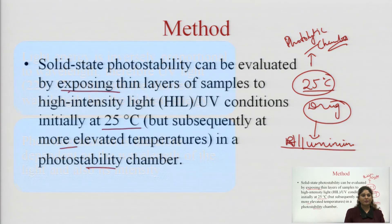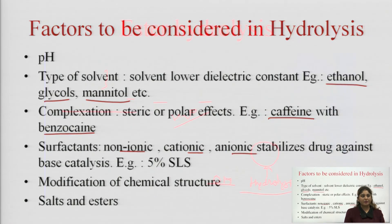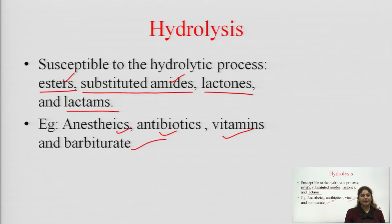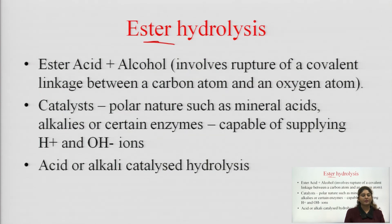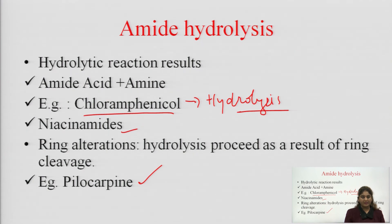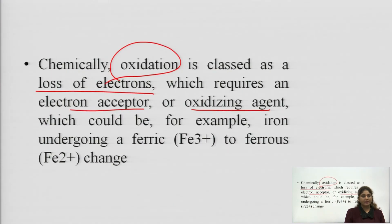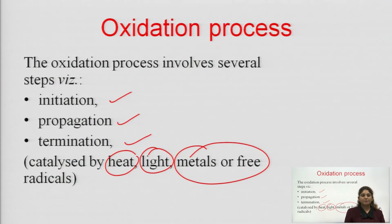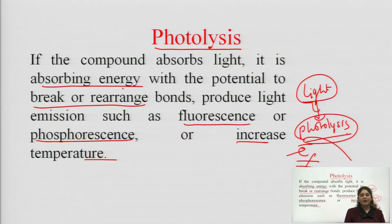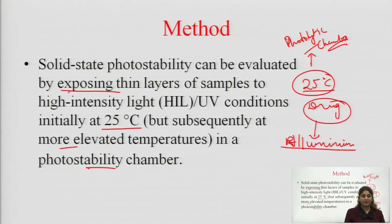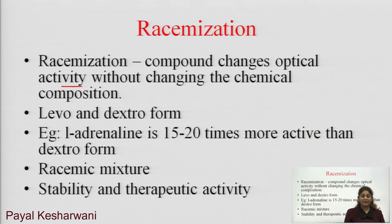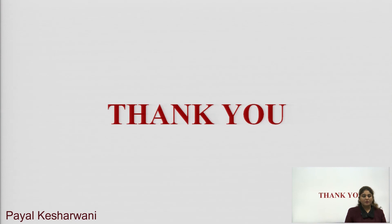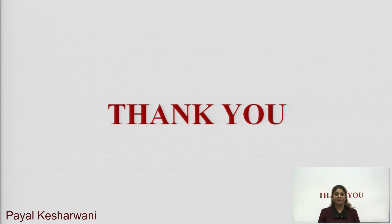Let us quickly revise what we have studied in this lecture. We first studied hydrolysis — the change or degradation of the drug in the presence of water — including ester hydrolysis and amide hydrolysis. After that we studied oxidation and how degradation takes place by oxidation, including the different steps of the oxidation process: initiation, propagation, and termination. Then we studied photolysis and its method. Finally we studied racemization. Hope you understood a lot from this lecture. Thank you, students.